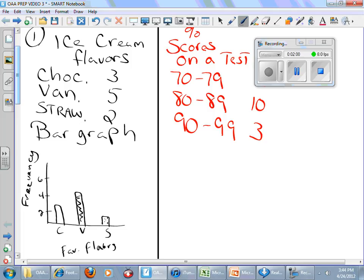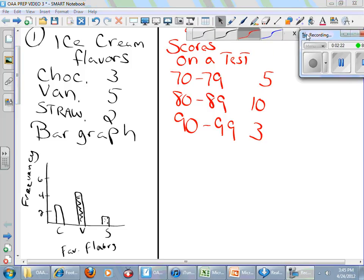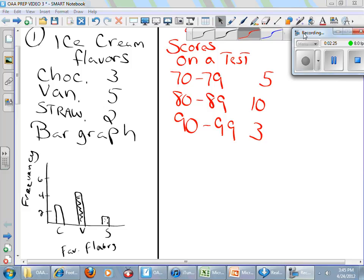If you were taking a survey of how many kids wanted to major in math, language arts, social studies, or science when they went to college, that would be bar graph because it's only one variable, the flavor of ice cream. And we're just counting how many times that variable shows up. The next one is percent scores on a test. And again, it's like one variable, but notice the data is presented in a range. If you have one variable presented in a range, this is a histogram.